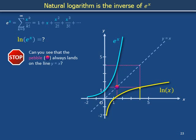Can you see that the magenta pebble will always land on the diagonal y equals x? The natural logarithm applied after the exponential e to the x spits back out x. The natural logarithm is the inverse of the exponential e to the x.